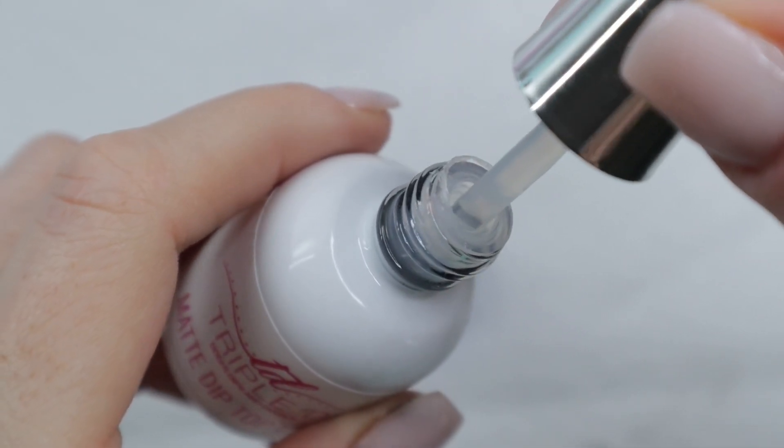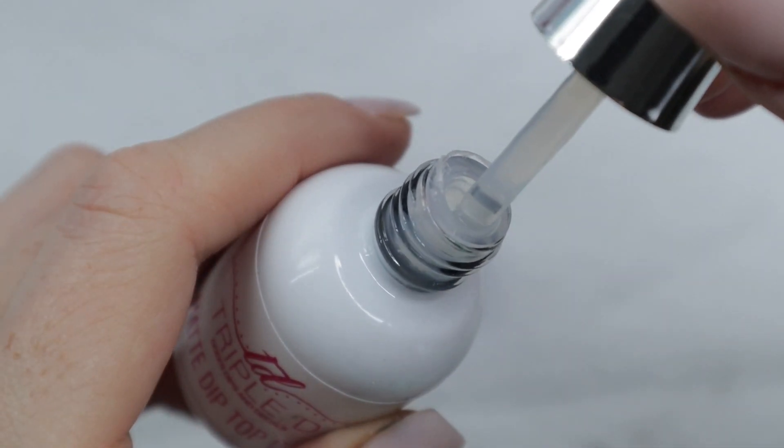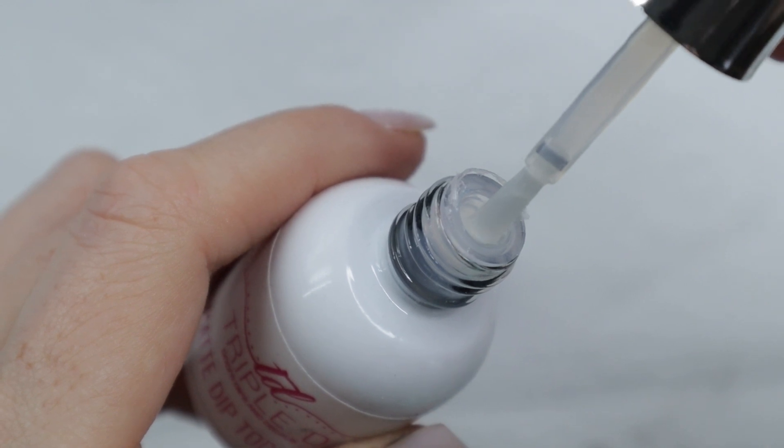The matte dip top coat has about a medium consistency. It's not thick, it's not thin, and it's not runny.